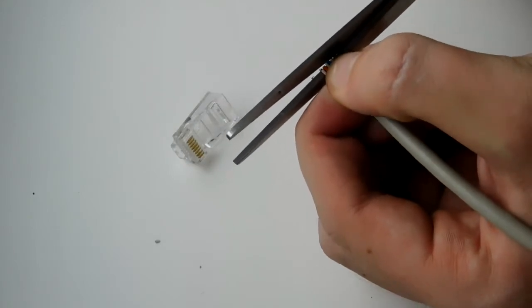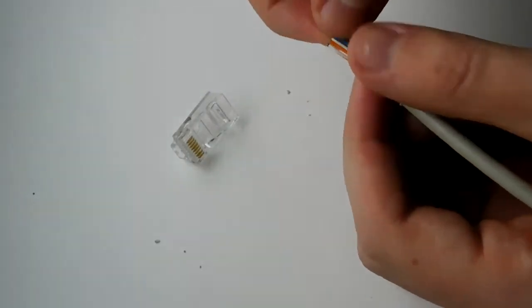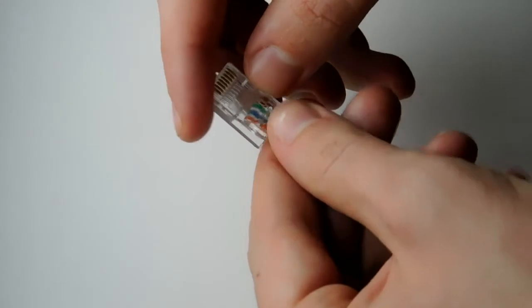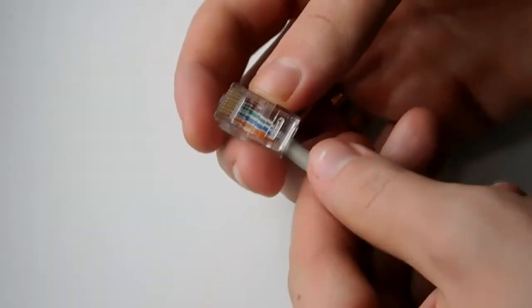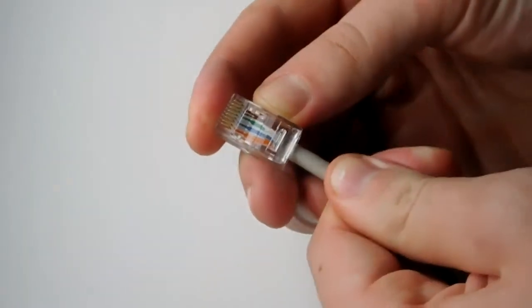So guys, put wires according to your scheme, align them, cut off ends to align if needed, and insert into the chip until it stops. It will look like this.